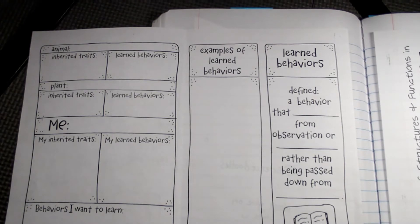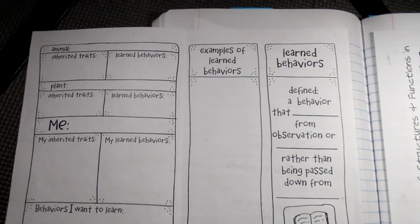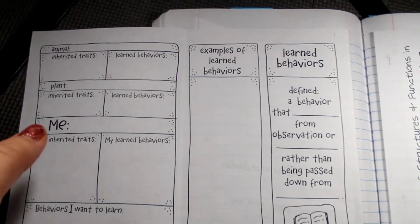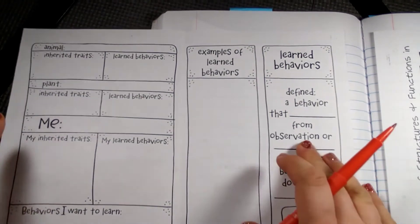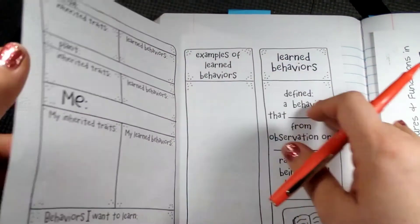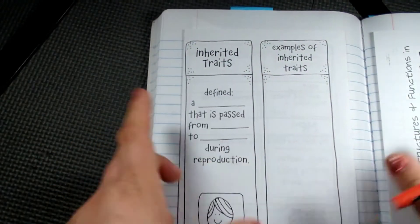We have a structural adaptation, which is something that is an organ, and we also have the functions of these structures. We also have behaviors, learned behaviors, and inherited traits.